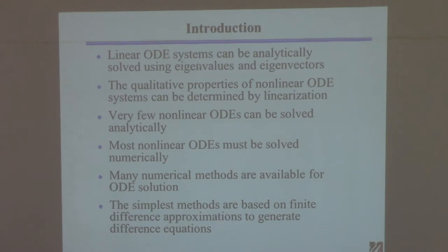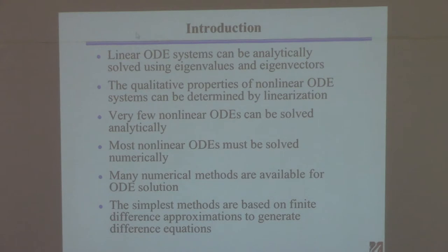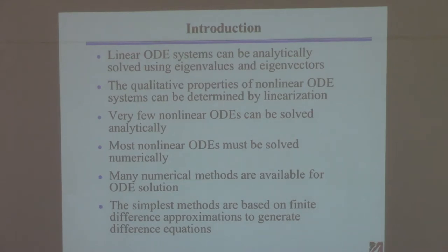If you have a system and it's a linear set of differential equations, all you have to do is find the eigenvalues and eigenvectors of this. Hope they're distinct so the eigenvectors are linearly independent, and then you can solve it. We've done that. We also learned you can find out about qualitative properties of the nonlinear system, like whether it's stable or not, by linearization. That's not a solution — it just tells you whether a steady state is stable.